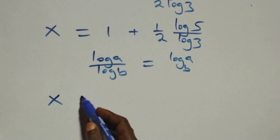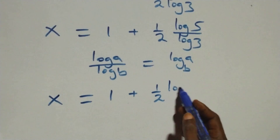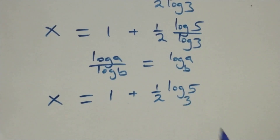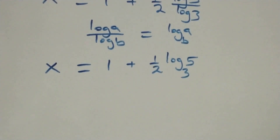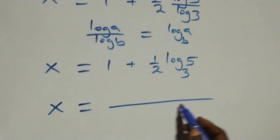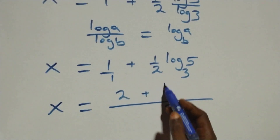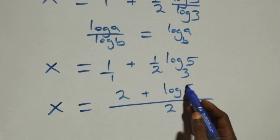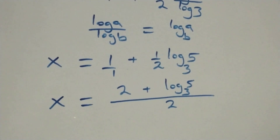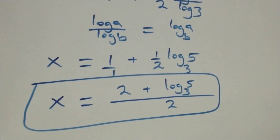What we have becomes x equals to 1 plus 1 over 2 times log 5 base 3. We can bring this together as a fraction, so this becomes x equals to 2 plus log 5 base 3, all over 2. That is, the value of x is 2 plus log 5 base 3, all over 2.